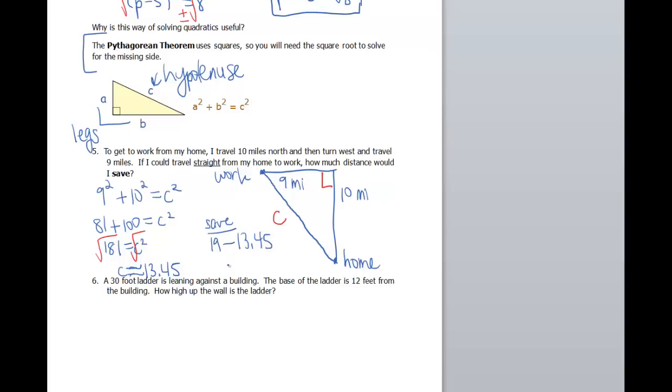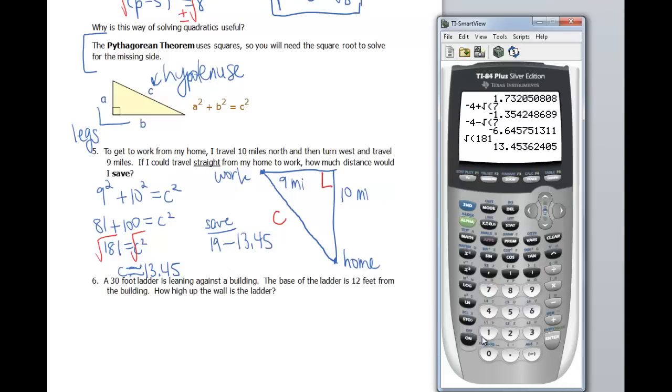Minus that 13.45. So I would save, I believe that's 5.55, but let's double check. So 19 minus the answer that I just got. So I can do second answer.